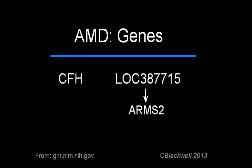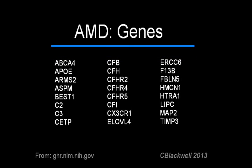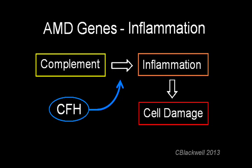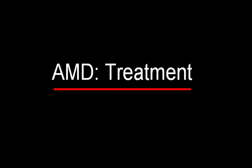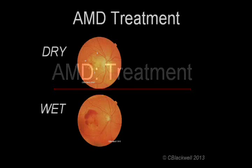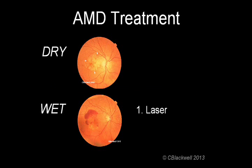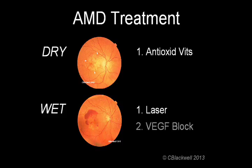Just a few years ago, certain genes were identified with the inflammation process. That allows for a targeted approach for research to try and prevent AMD. A quick review of AMD treatment: at first, the only tool we had was laser to cauterize leaking vessels in wet AMD. Then researchers found the oxidative damage in dry AMD could be slowed with antioxidant vitamins. Medicines to block VEGF turned out to be a better way to treat wet AMD because they avoided the damage done by laser. Most of the current research is directed at regaining control of the pathways of inflammation.